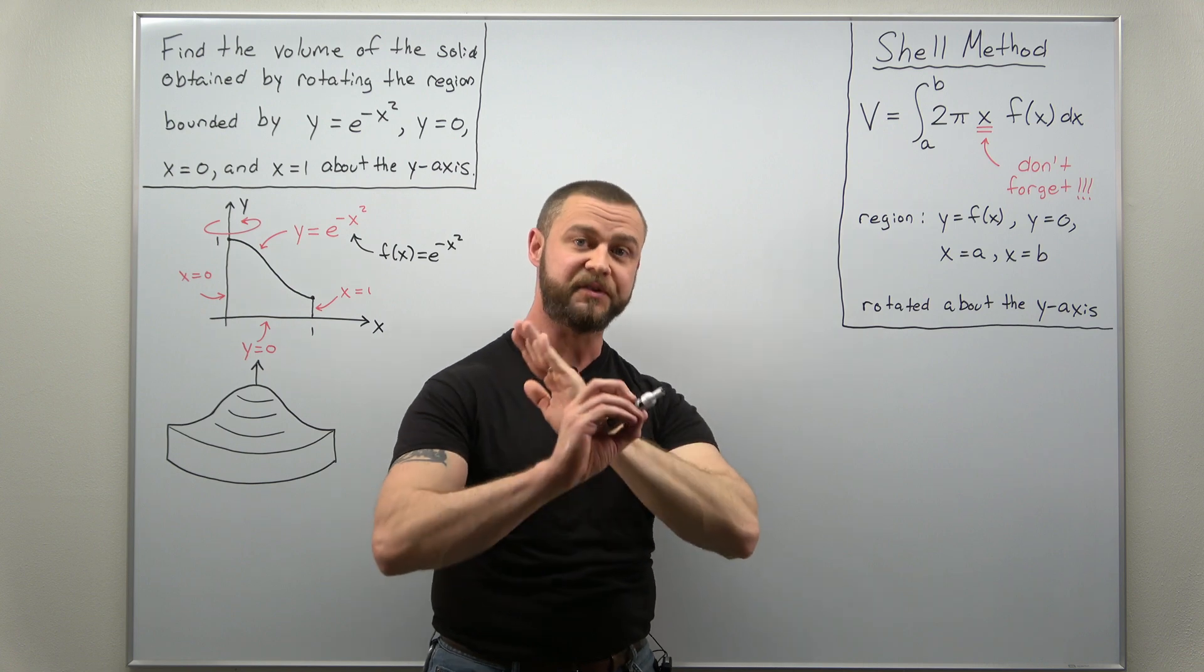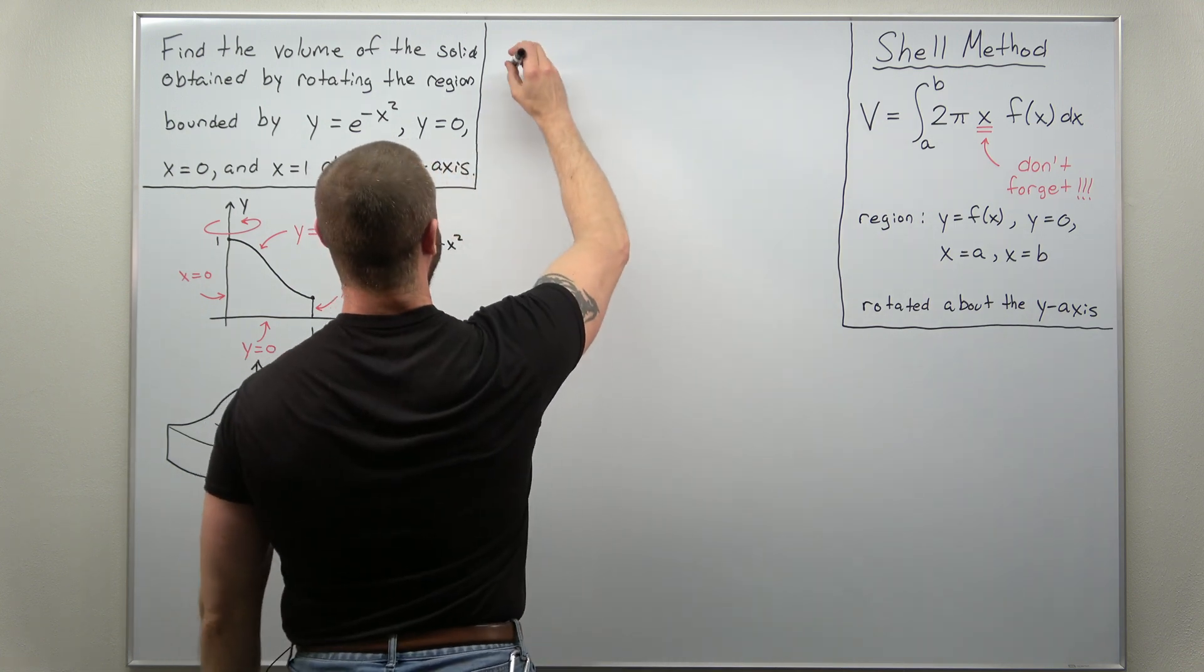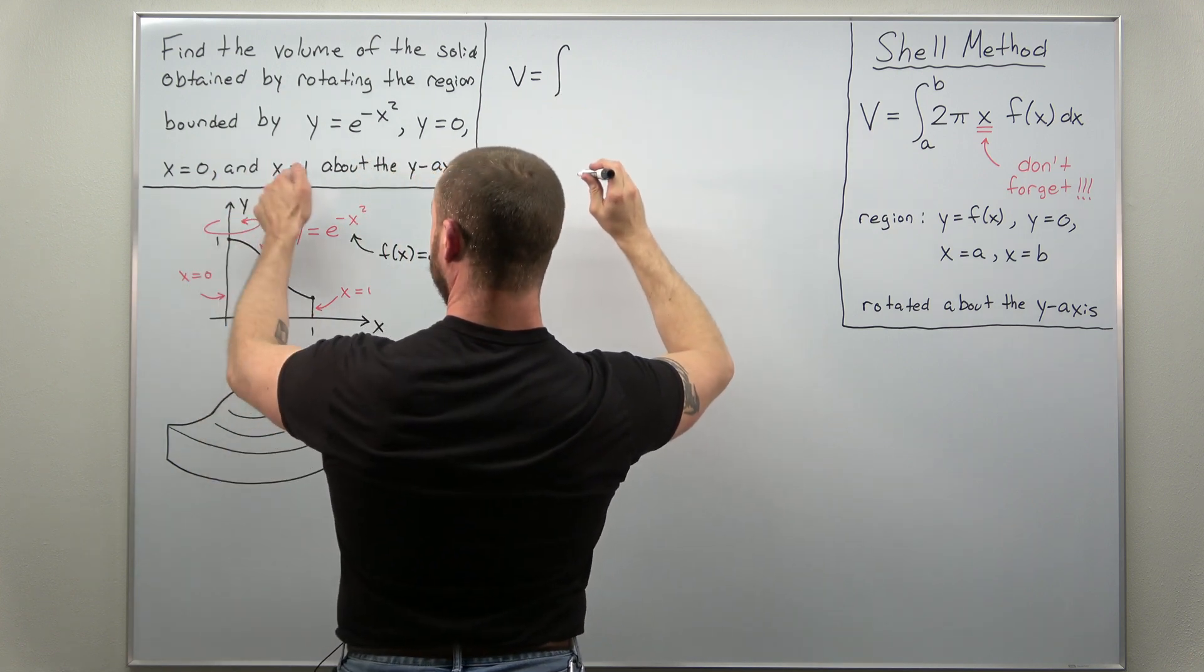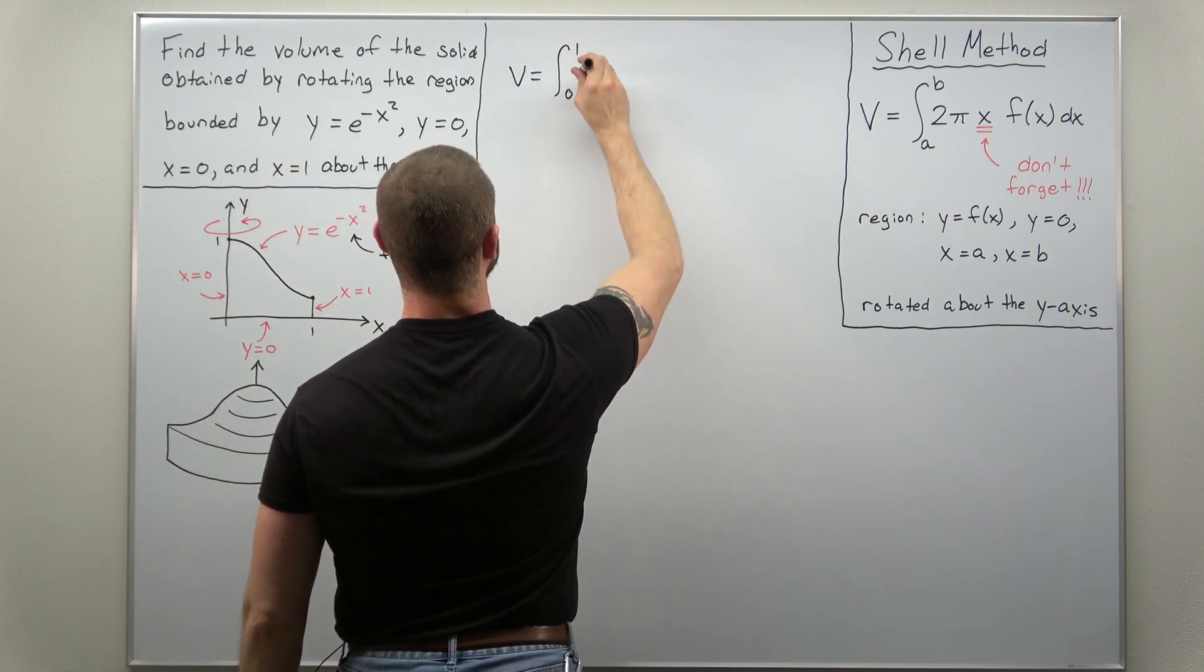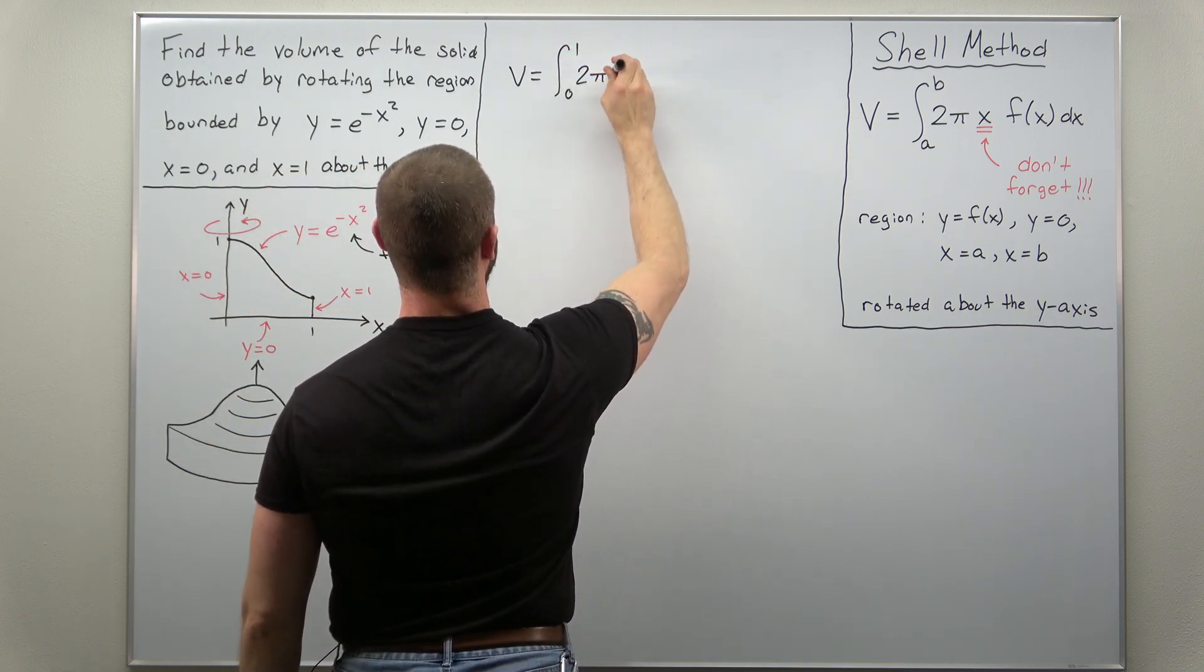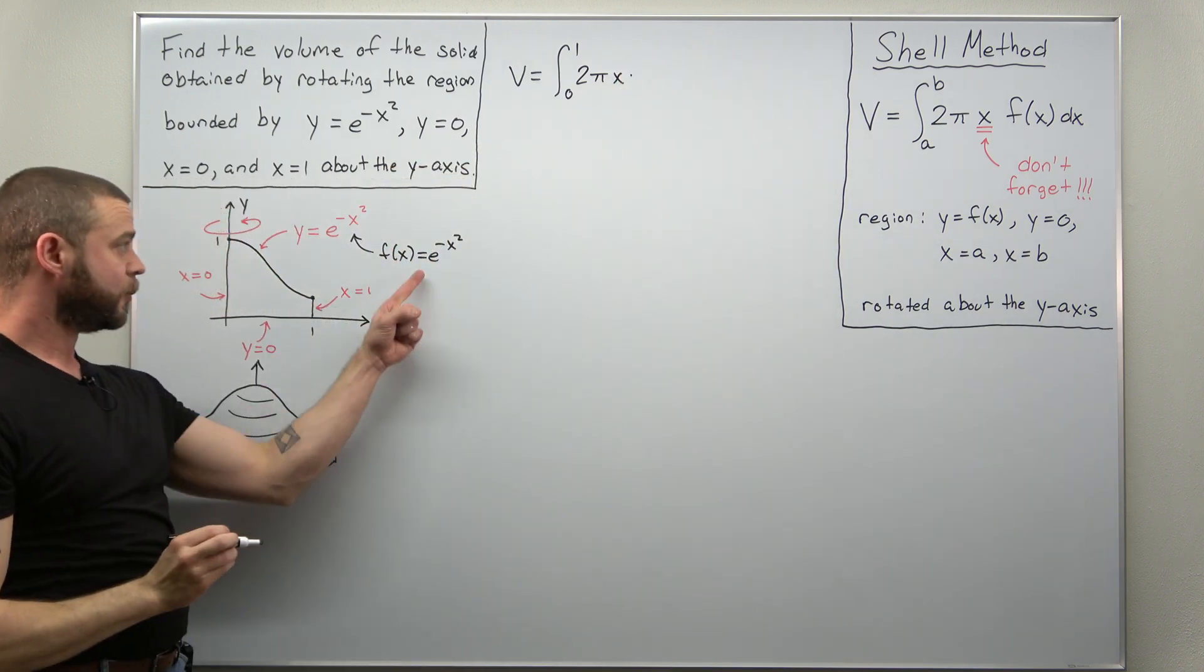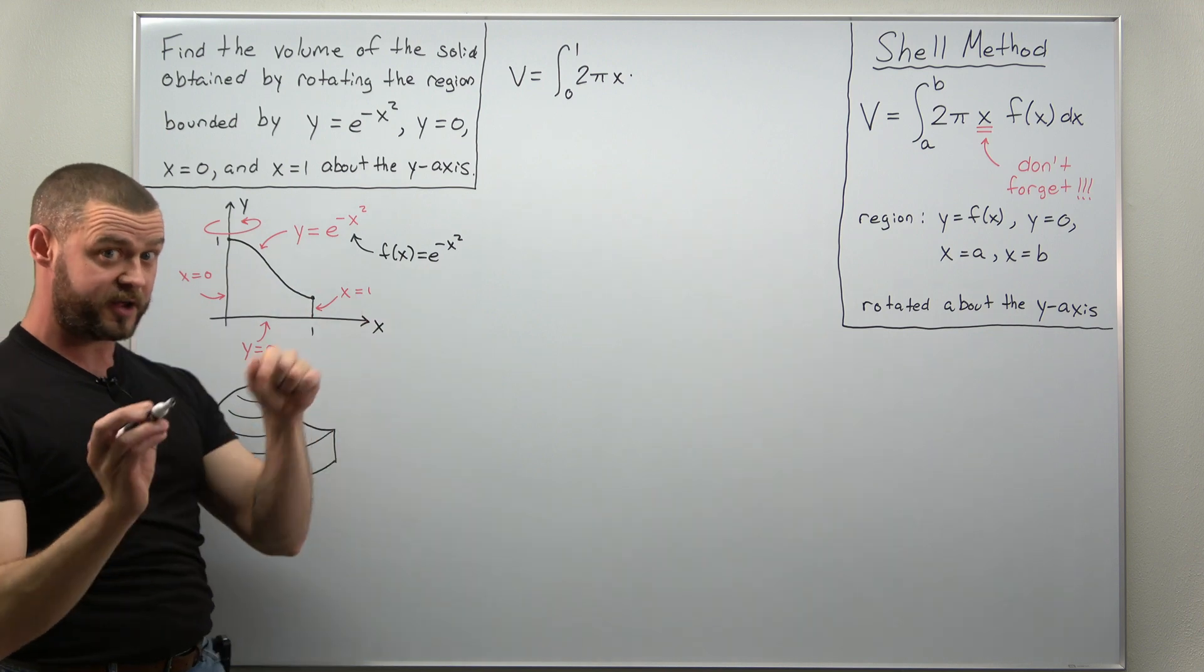So the setup is very straightforward, we get our volume integral as an integral from 0 to 1. We have our factor of 2π x and then we're multiplying that by f of x which is e to the negative x squared here for this problem.